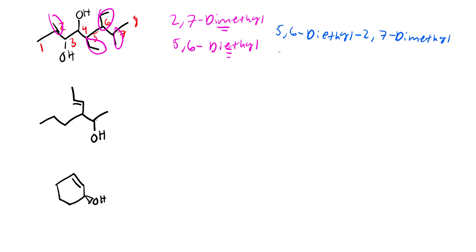When putting together substituents, we ignore the di and consider only M and E for alphabetical ordering. E comes before M. So we say 5,6-diethyl, then 2,7-dimethyl. My parent chain is an octane. Since we have two alcohols it's a diol, so we keep the E. Then diol. So: 5,6-diethyl-2,7-dimethyl-3,4-octane-diol. I numbered from the left going right because I'd rather have 3,4-alcohol than 5,6-alcohol.